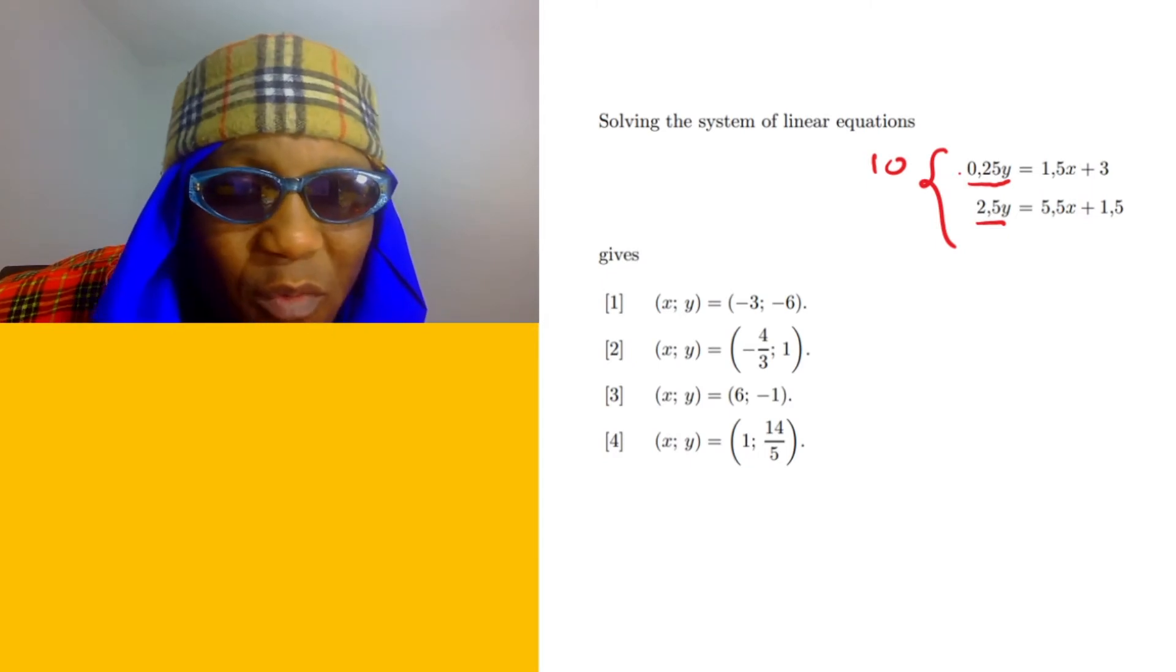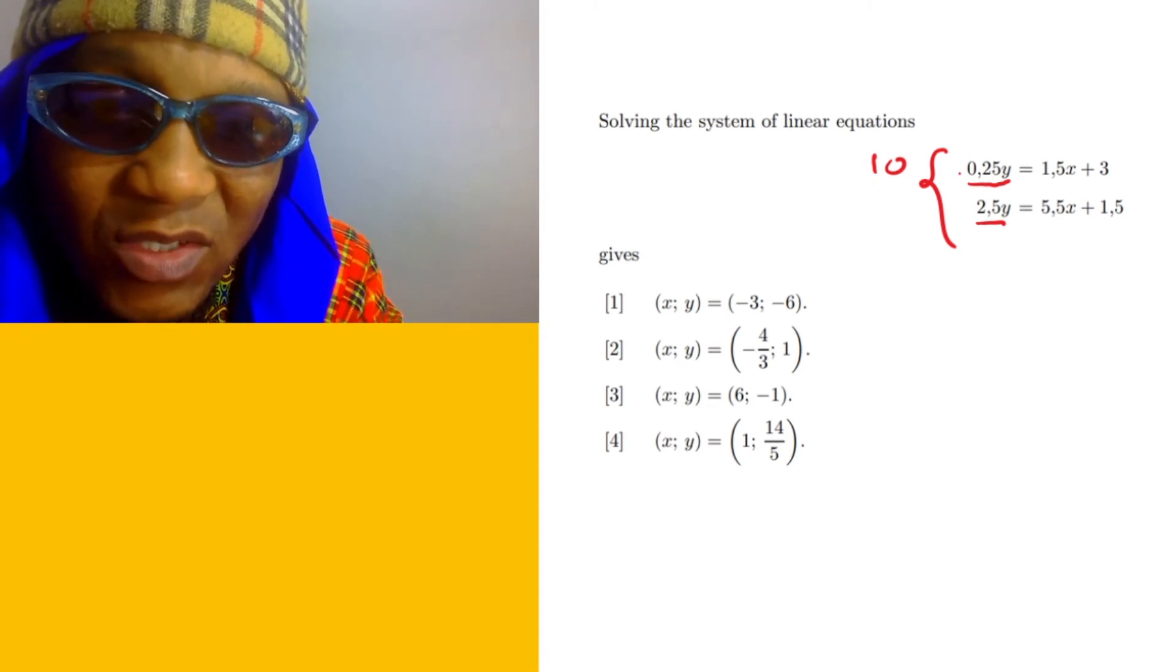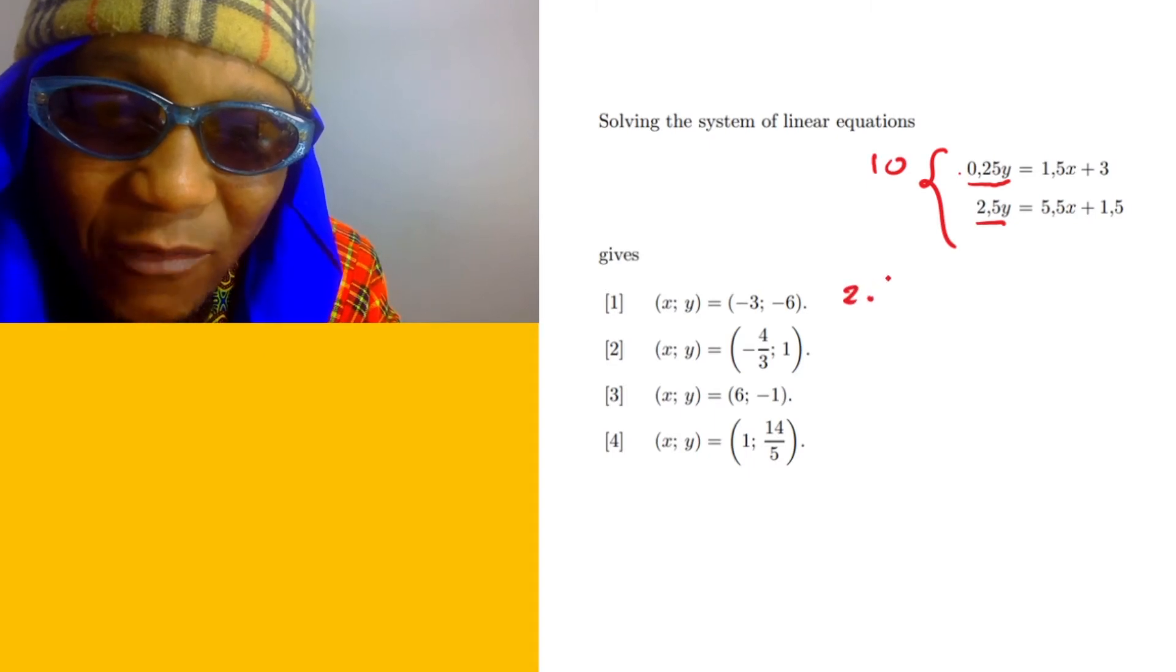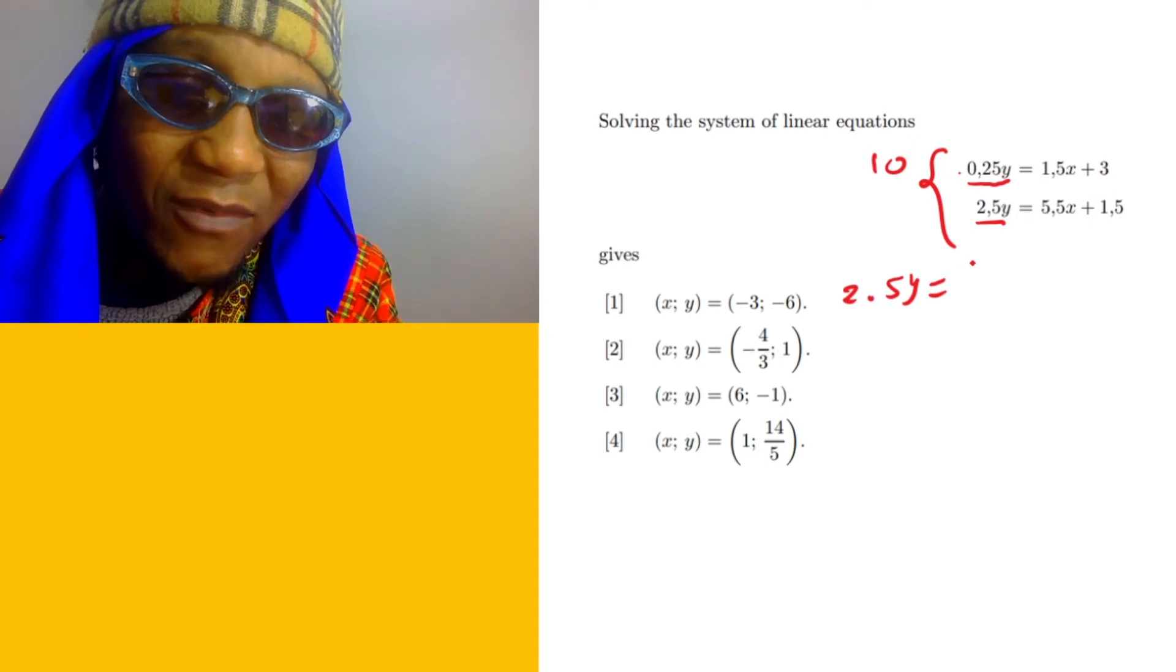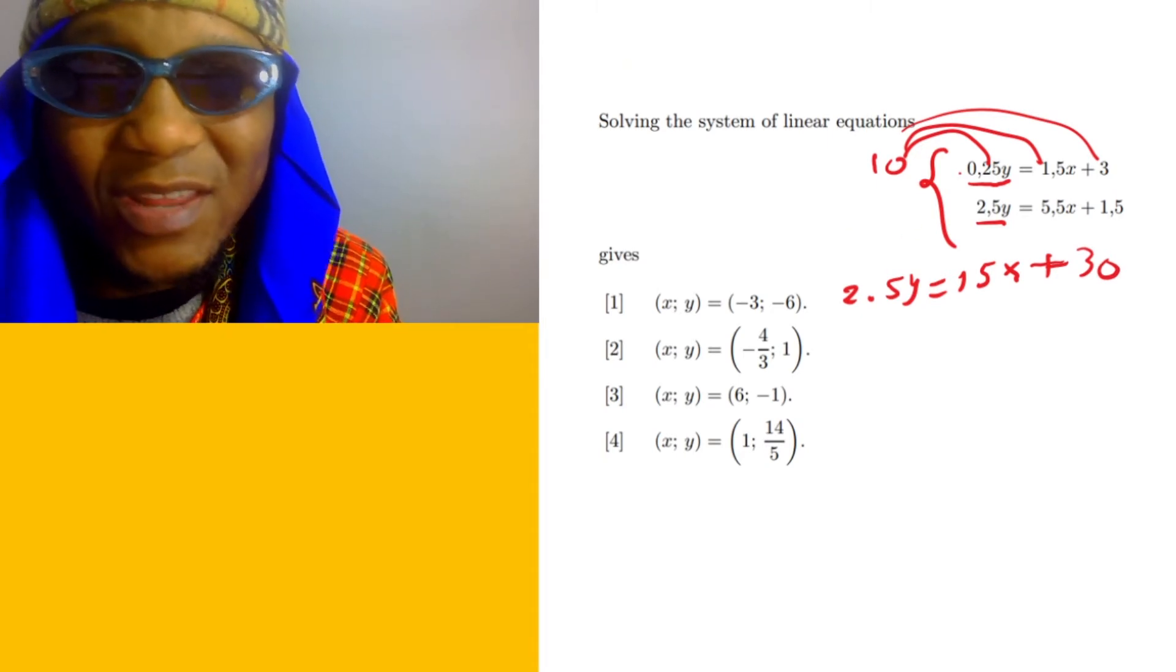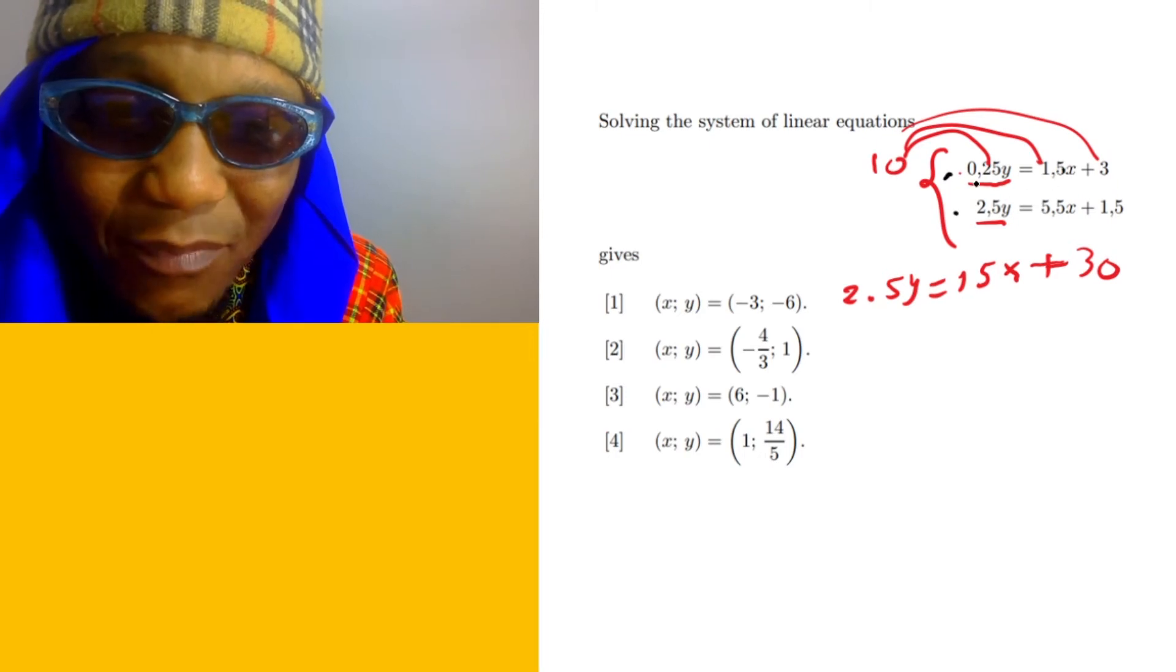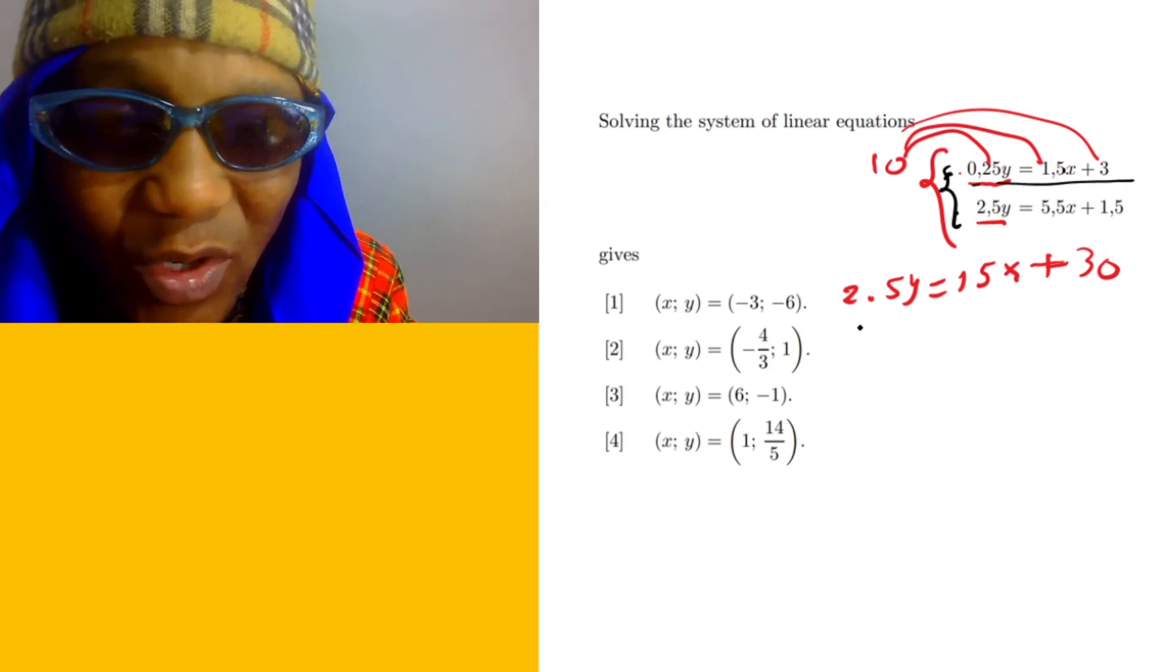When I multiply the first one, it's gonna give me 2.5y equal to... 10 times 1.5 is gonna give us 15, but this one has x. You multiply for each one, for the second one, for the last one, which is gonna give us 30. The second one, you don't have to do anything because that's what you wanted—these to be the same. We picked y to be the same. When you multiply, it affects everything. So the second one is gonna be 2.5y equal to 5.5x plus 1.5.